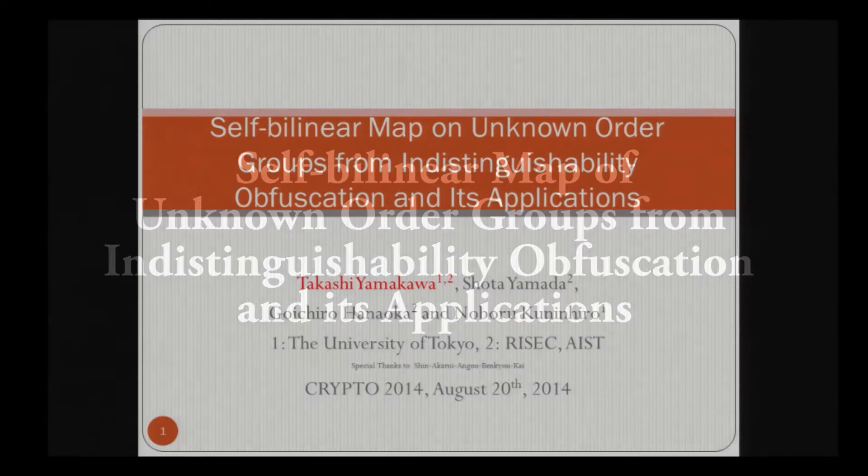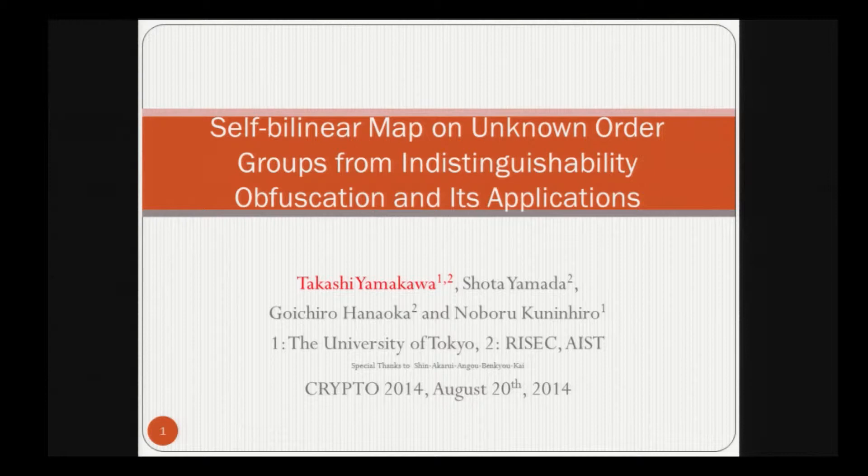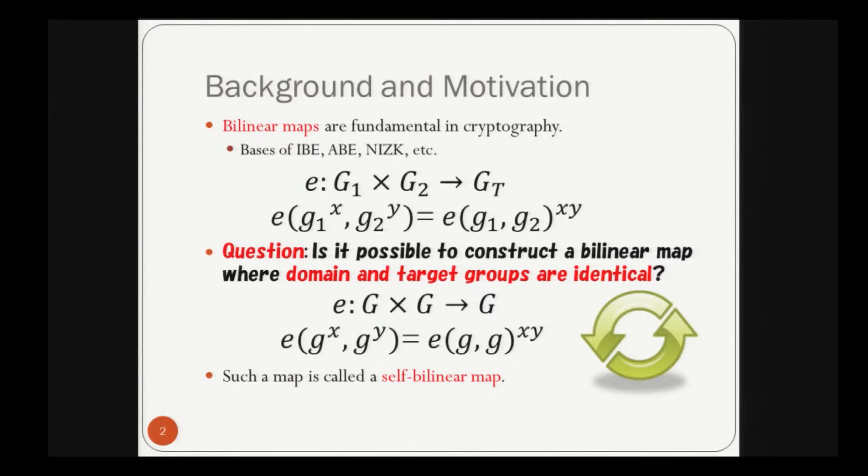I'm Takashi Yamakawa from the University of Tokyo. The title of this talk is Self-Bilinear Map on Unknown Order Groups from Indistinguishability Obfuscation and its Applications. This is a joint work with Shota Yamada, Goichiro Hanaoka, and Noboru Kunihiro. First, I will introduce the background and motivation.